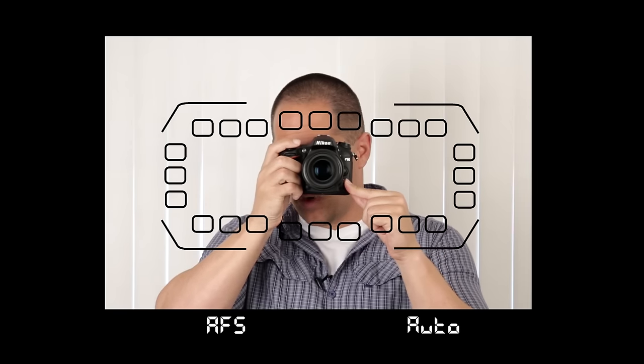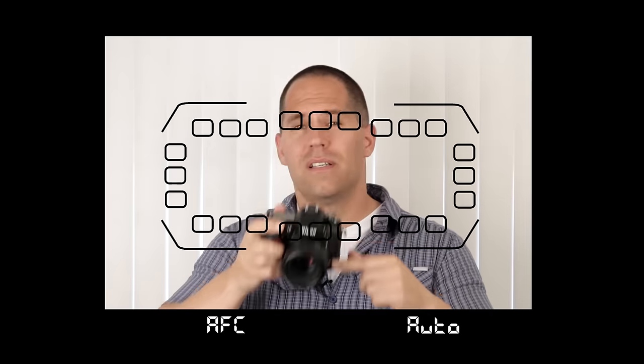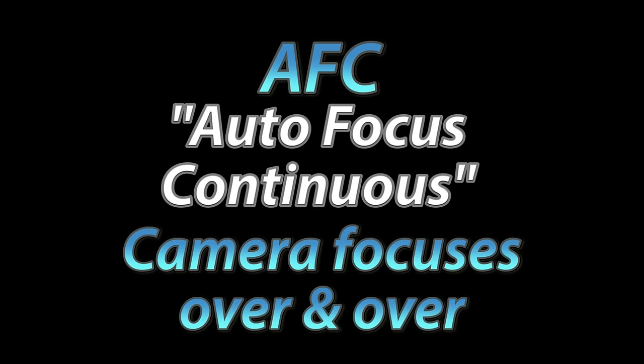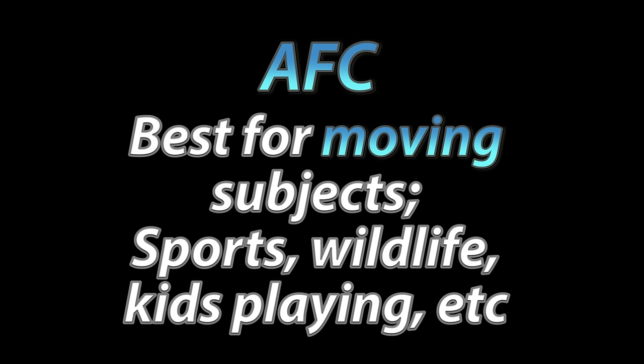Go ahead and look through your viewfinder, push your autofocus mode button down again, and we're going to change it now to say AFC. AFC stands for autofocus continuous. What this means is that the camera is going to be focusing over and over and over again, as long as you're holding your shutter button halfway down. Continuous focus is best for moving subjects such as crazy little kids, pets, animals, wildlife, things that are moving.